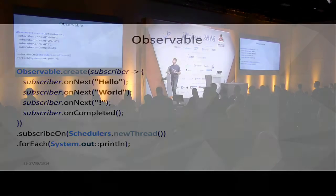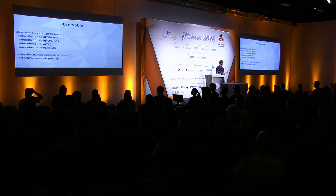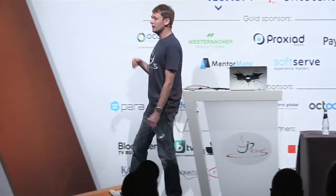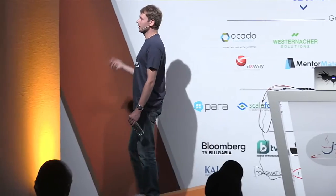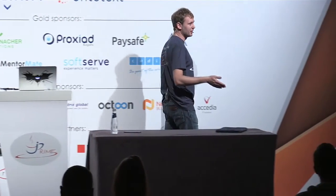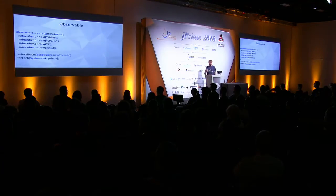There are a lot of Schedulers defined. There is a computation Scheduler, which is usually a thread pool limited by number of cores — it's dedicated only for computational stuff you can do very quickly. There is IO, which should be used for non-blocking IO because the queue is actually unbounded — you don't want to put computation stuff on the IO Scheduler. And many more, like newThread.